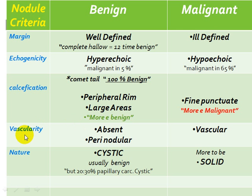Finally, V — Vascularity. The vascularity will be absent or perinodular in a benign nodule, but a malignant nodule will be hypervascular. As seen in this table, all these features are suggestive — except for the comet tail sign, which is 100% indicative that the nodule is benign.